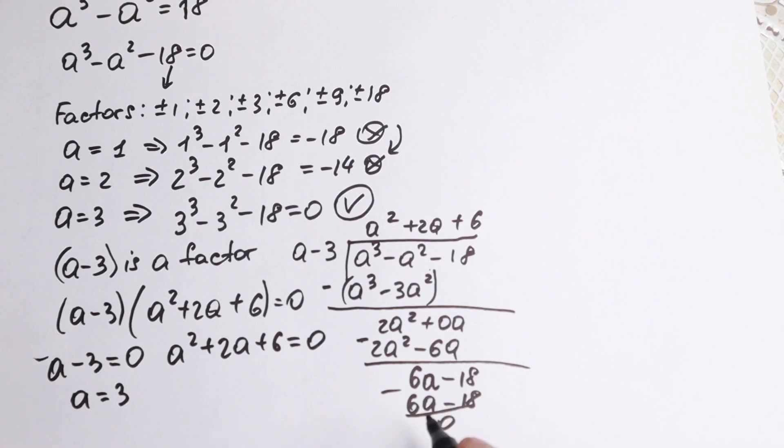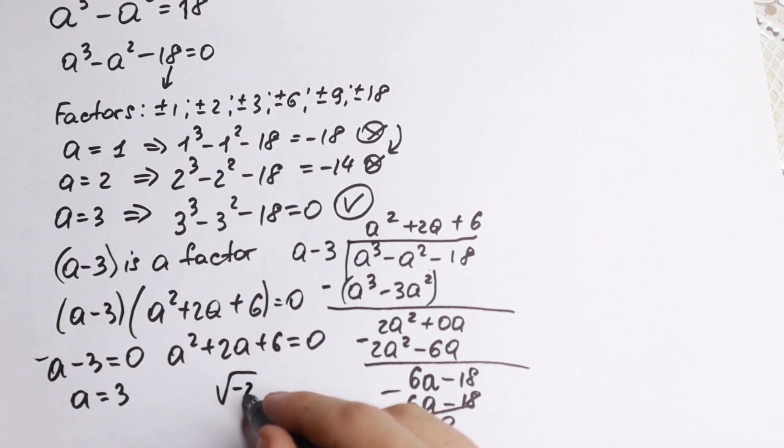And the second equation a² + 2a + 6 = 0. Of course, if we find our discriminant, we will have 4 - 24. So our discriminant will be -20. So we'll have two complex roots.